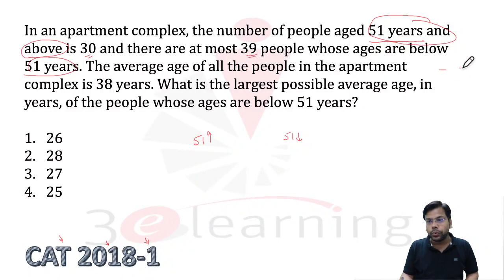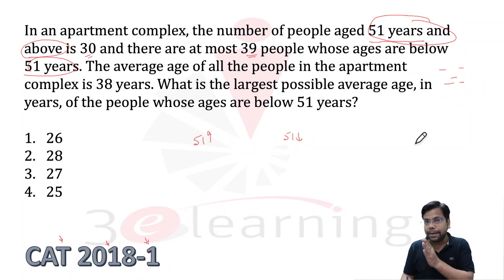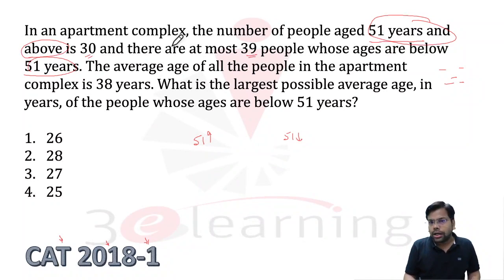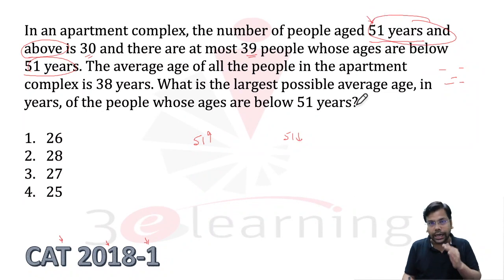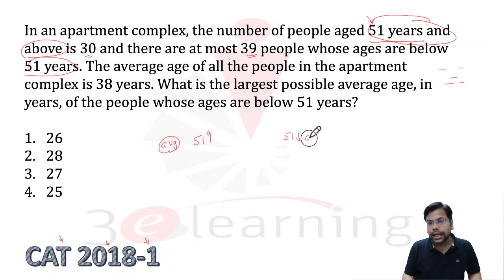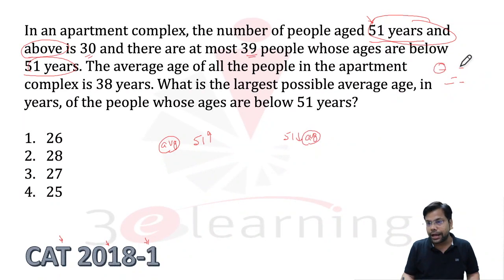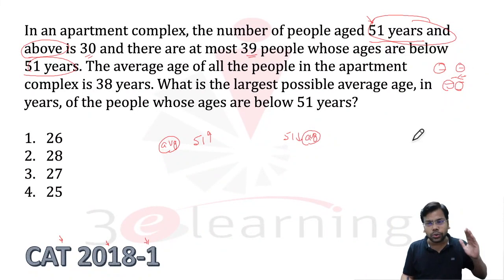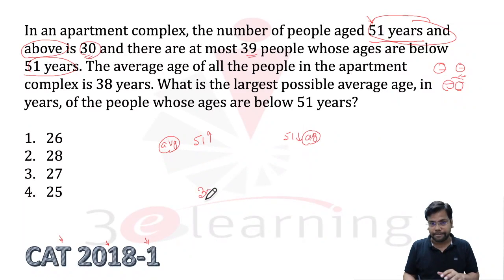Whenever in arithmetic we have two categories, we create a star and solve the question — this is a question of Mixture and Allegation. I am going to solve this with the star method. The people aged 51 and above: their count is 30, which is given. At most 39 are below 51, so 39 is the maximum.